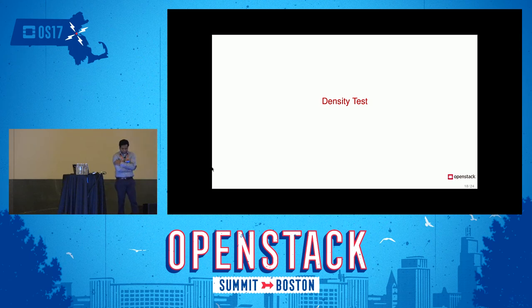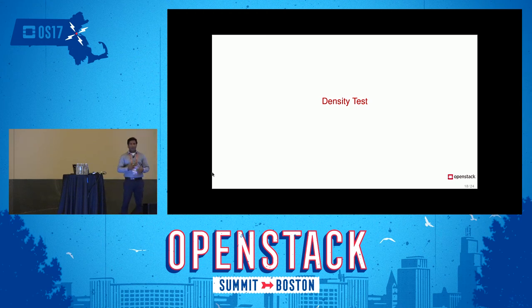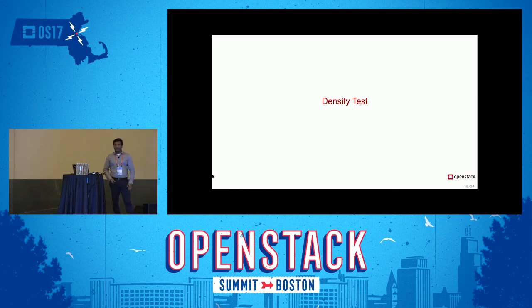Fourth, let's talk about density testing. Before onboarding a lot of machines to Ironic, we did a scale test — we booted around 100 machines to see how the system performs with 100 parallel boots. It worked well. Then we also did a density test, adding around 50,000 nodes into the OpenStack system to see how it performed.